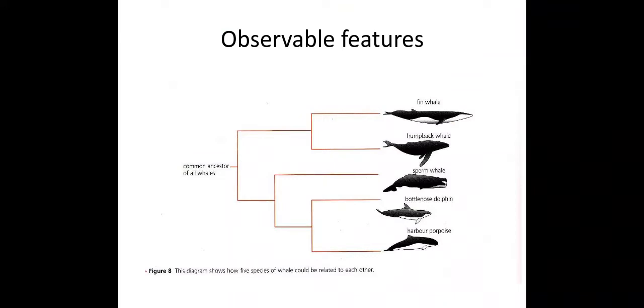You can do the same with these whales and dolphins. We can group them in a phylogenetic tree which shows the evolutionary relationships based upon their observable features. You can see that the fin whale and the humpback whale are grouped more closely together than the other three.